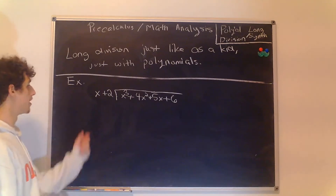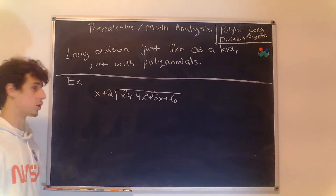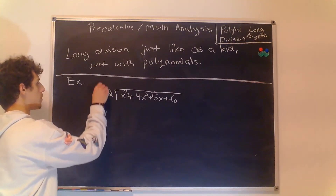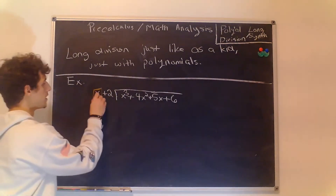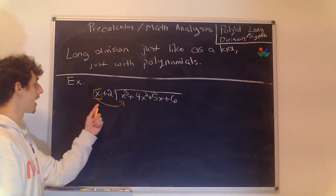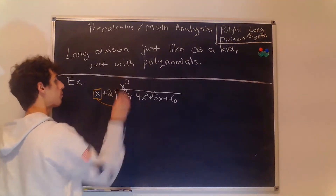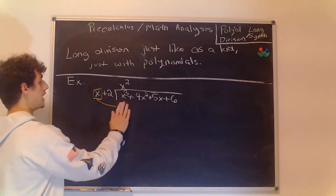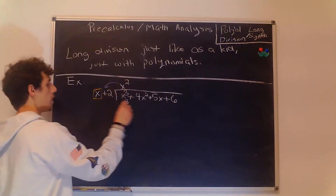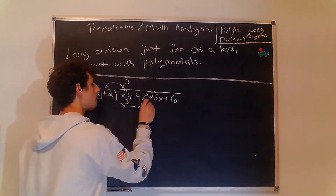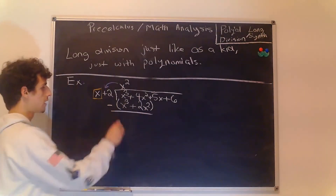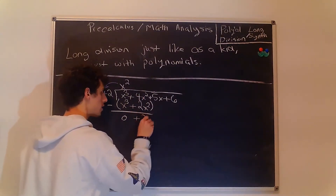We want to look at these first two terms and notice what we can multiply the biggest exponent of the divisor by to get the biggest exponent of the dividend. In this case, what we need to multiply x by to get x cubed is x squared. We multiply that into the entire divisor, which gives us x cubed plus 2x squared. Then we group these together and subtract, which gives us 0 plus 2x squared.